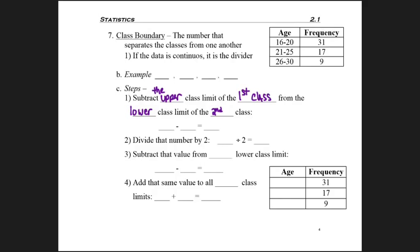So trying to look at those numbers, I start with the upper class limit of the first class, which means I start with the 20. Now I take the lower class limit of the second class, which is 21, and when I subtract those I get 1. So now I need to divide that number in half, divide by 2, so I can separate the two classes to get 0.5.